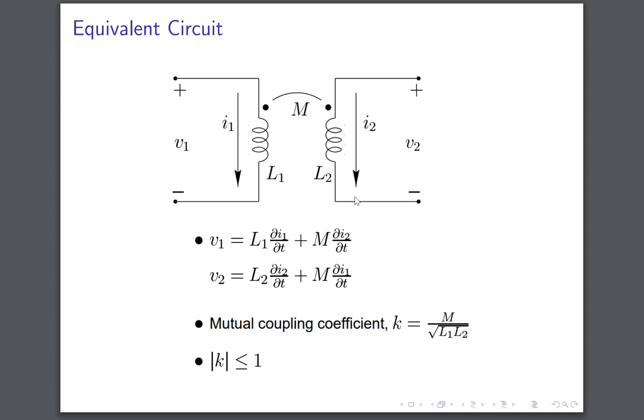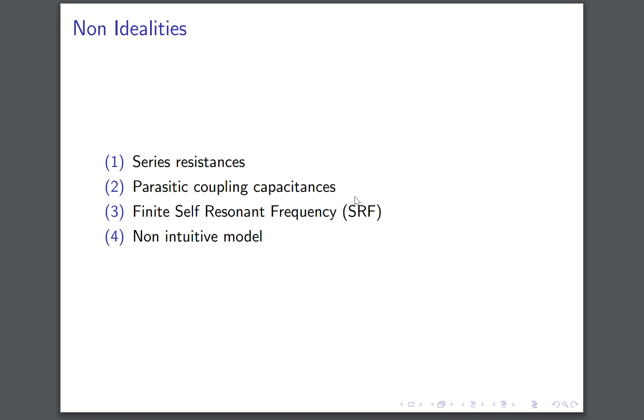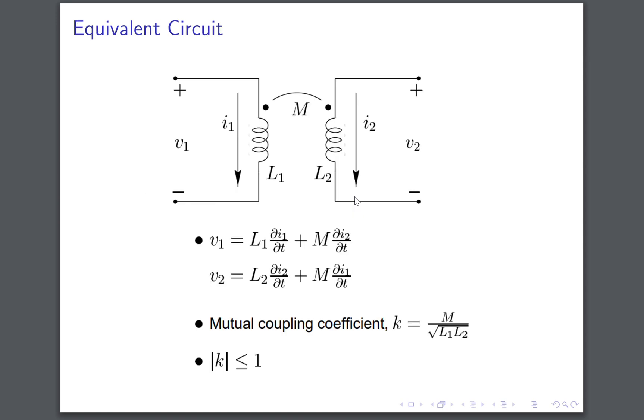k can be either positive or negative. Typical on-chip transformers have k ranging from 0.7 to 0.2 to 0.3. That depends on the specific topology as I would go on. This is an idealized version of a transformer used for hand calculation.